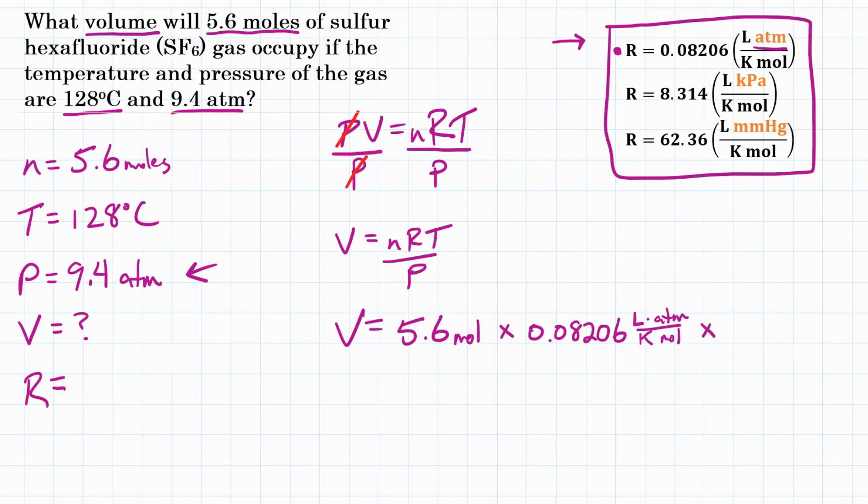Okay, and then on top, we also need the temperature. The temperature is 128 degrees Celsius, which we need to convert to Kelvin. So to do that, we're going to add 273 and get 401 Kelvin for our temperature. So that will go up top, 401 Kelvin.